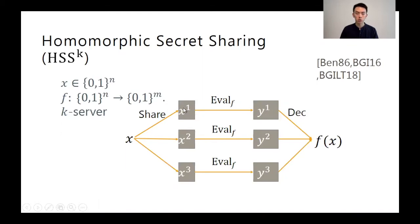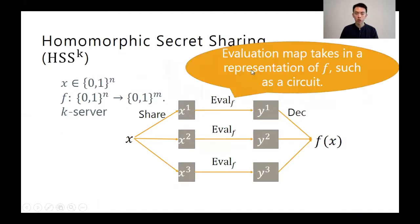Each of the servers turns the input shares into an output share by applying a local evaluation mapping that takes in a representation of the function being computed. At the end, the output shares are sent back to the client, and the client can apply a decoding procedure to recover the actual value. It is important to note that for homomorphic secret sharing for function families, we actually mean for the representation of the function, because it is the representation that's actually used in the scheme.